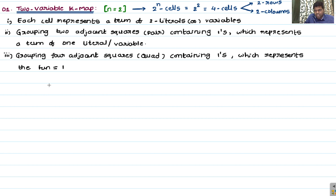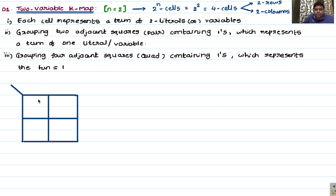Here is the four-cell K-map for n equals 2. We have 2^2 equals four cells, each cell being one square box. Four cells means two rows and two columns. You can observe two rows — first row and second row — and two columns, giving four cells total. This is the pattern to represent for n equals two variables.